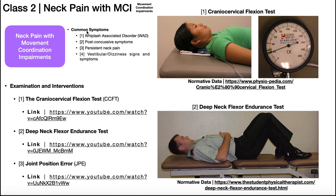Common symptoms associated with this classification include: whiplash associated disorder, or just whiplash; post-concussive symptoms after a concussion (a mild traumatic brain injury caused by a blow to the head — and since the head is connected to the neck, there's also potential for neck problems); persistent neck pain with movement coordination impairments; and signs or symptoms consistent with vestibular issues and/or dizziness. The common theme is really trauma to the head and/or neck.